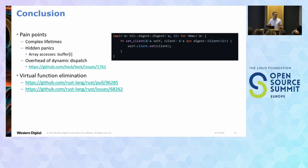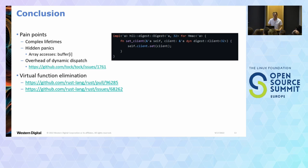There are a few pain points in embedded Rust. One is lifetimes. If you've done much Rust you quickly run into them. Here's an example of a basic function that calls down to the layer below it, and you can see tick-A lifetime annotations everywhere. You're telling the compiler: as long as our struct exists, the buffer will also exist, and the client will exist for this long. It makes sense once you learn Rust, but it's a hard thing coming from C, and it can look very clunky and verbose.